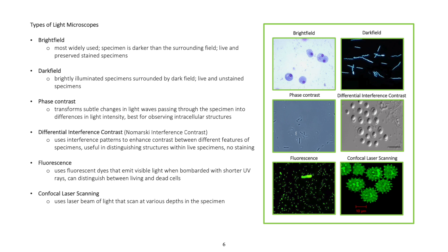Phase contrast microscopy transforms subtle changes in light waves passing through the specimen into differences in light intensity. It's best for observing intracellular structures.